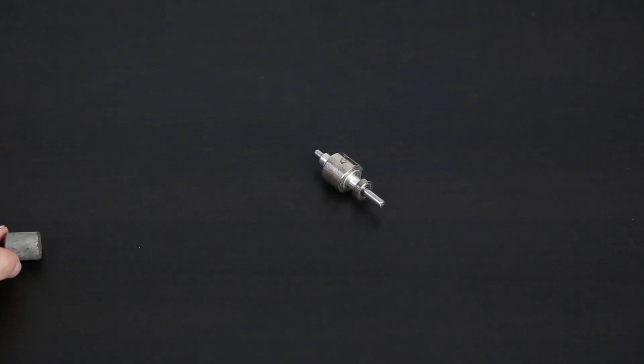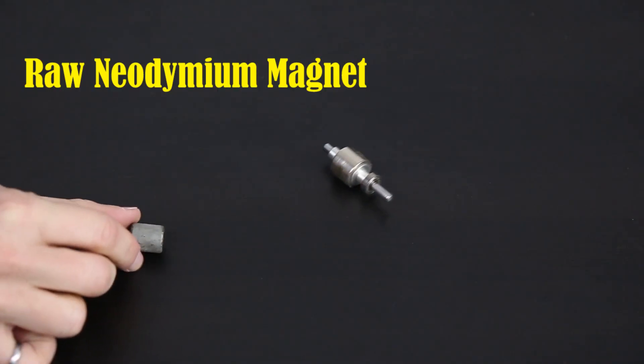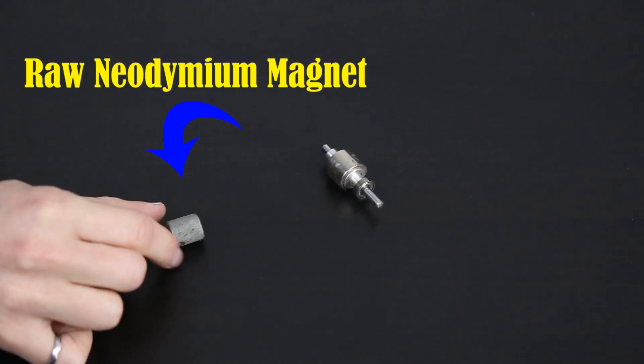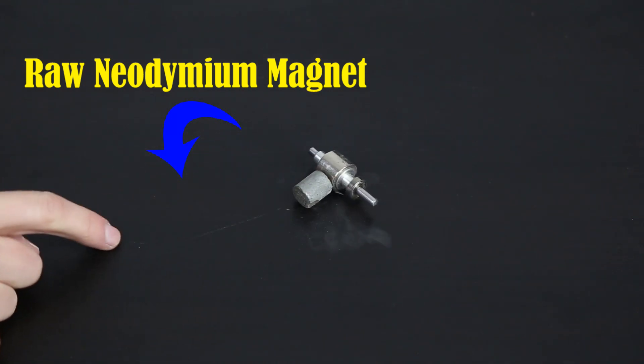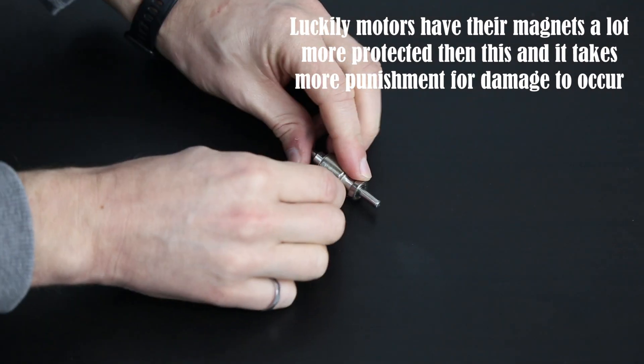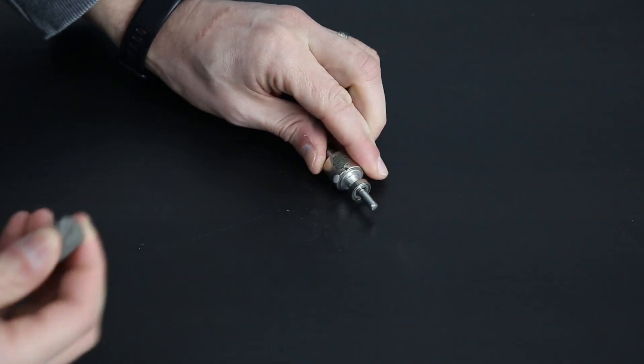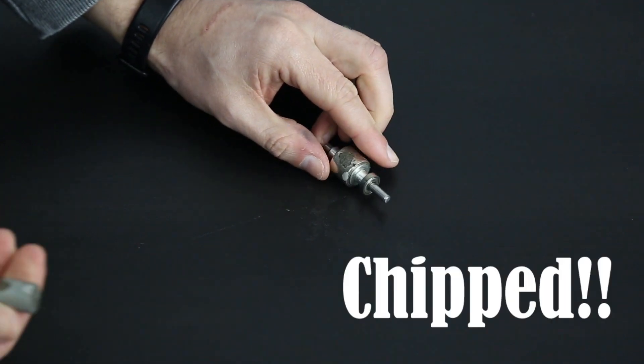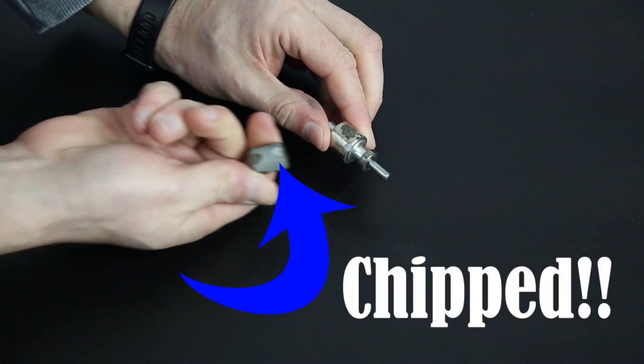Another point to make about these neodymium magnets is that they are extremely brittle. Depending on how your rotor is actually constructed, if you come in close contact with another part of the motor, you can actually damage and have part of the rotor chip right off. Now it's important to be very careful when you're inserting that rotor back into your motor for those couple points.